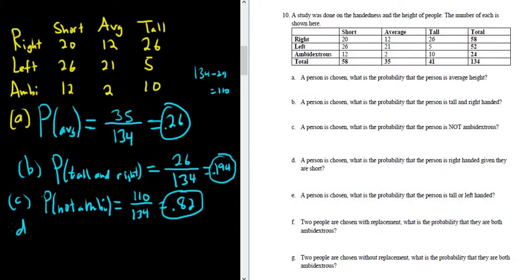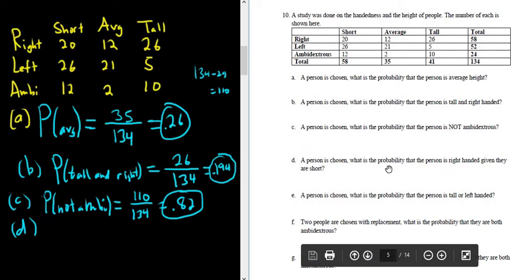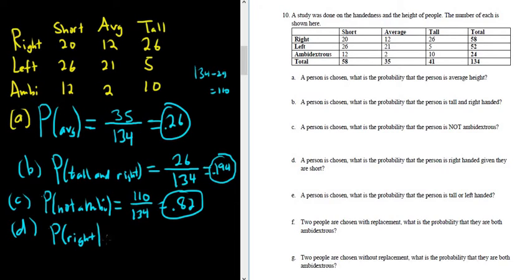Part D. A person is chosen — what is the probability that the person is right-handed given that they are short? So P(right | short). Whenever you have a 'given,' the bottom number is going to change — this is a conditional probability. We know the person is short, so that reduces our sample size from 134 to the number of short people, which is 58.